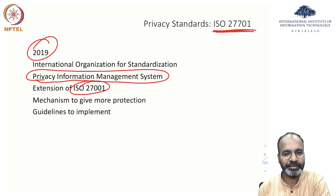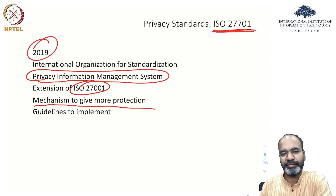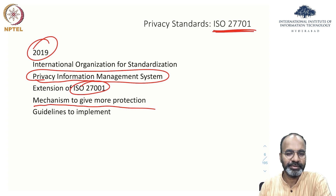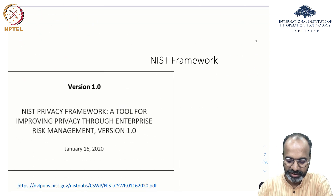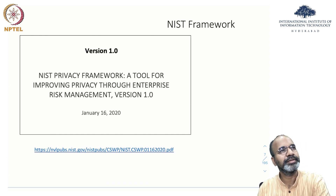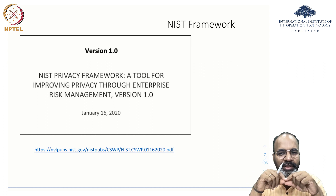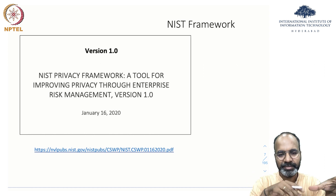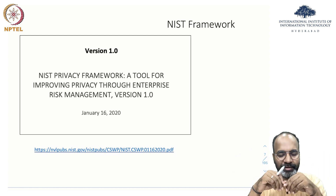These standards help to provide a mechanism to give more protection, making sure that protection actually happens. They have documents and expectations of how implementation should be done, which is written in the standard. ISO 27701 is one type of standard; there are many privacy standards, and in recent times privacy standards have also been overlapping with security standards.